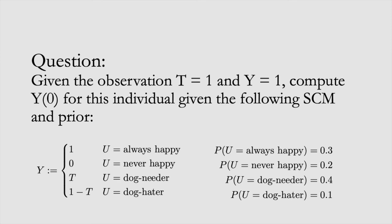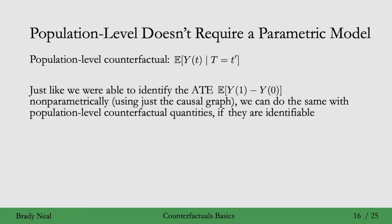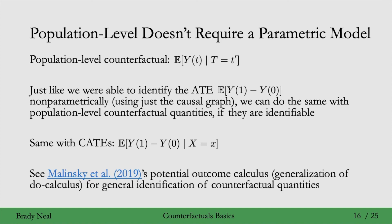Without a parametric model for the structural equation for y, we can't compute counterfactuals at the unit level. But if we care about the population level, we don't need such a parametric model. At the population level, we're talking about the expectation over the whole population — and it's counterfactual because t does not match t-prime. We've actually seen this before: we were able to identify the average treatment effect non-parametrically, just using the causal graph, and we can do the same with population-level counterfactual quantities if they're identifiable. For general identification of counterfactual quantities, see the 2019 paper by Molenski et al., which introduces the potential outcome calculus — a generalization of do-calculus for identifying counterfactual quantities — since do-calculus handles expressions with the do-operator, which are not counterfactual, while this paper handles counterfactual expressions similarly.